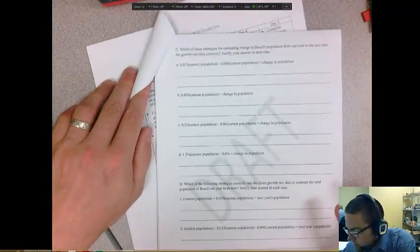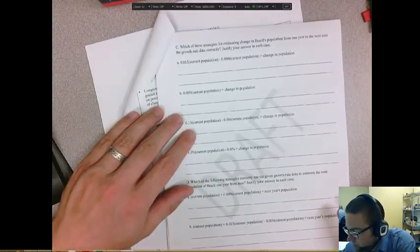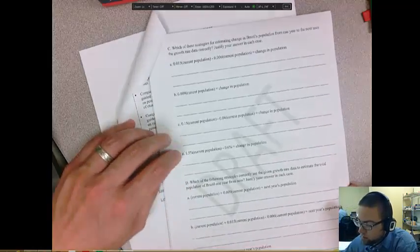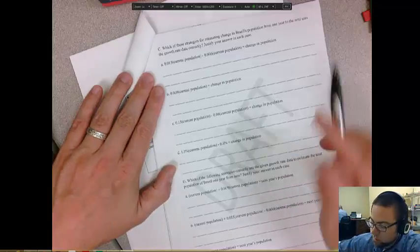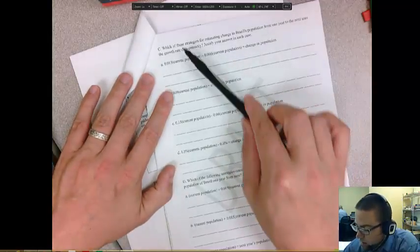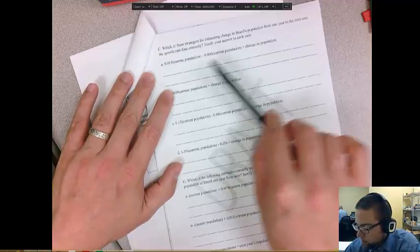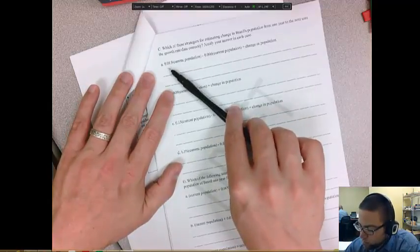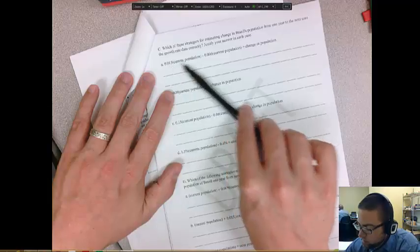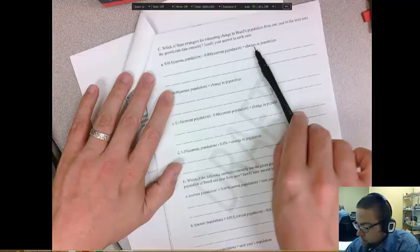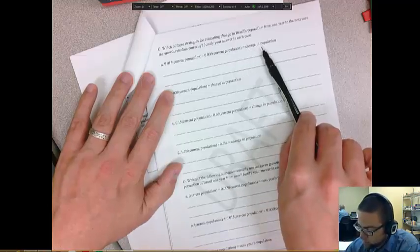Okay. Which of these strategies for estimating the change in Brazil's population from one year to the next uses the growth rate data correctly? So you have to look at this equation and see if this is correct, right? Does it match up with the data?